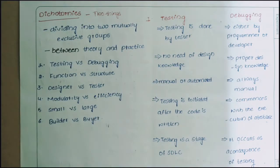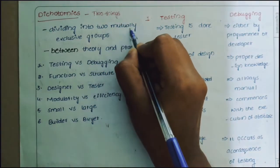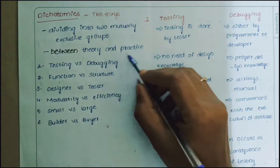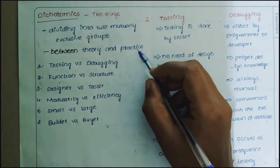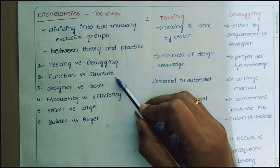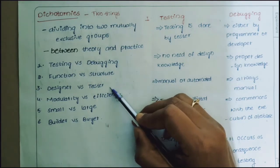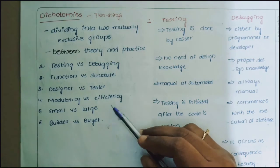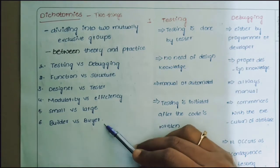In today's video we are going to discuss about dichotomies. Dichotomies are nothing but a contrast between two things — these are mutually exclusive groups. There are six dichotomies: testing versus debugging, function versus structure, designer versus tester, modularity versus efficiency, small versus large, and builder versus buyer.